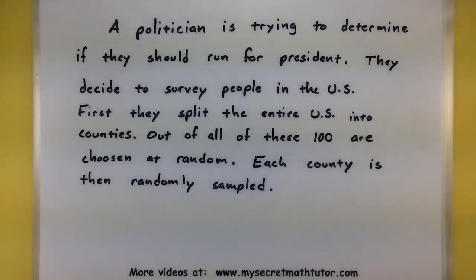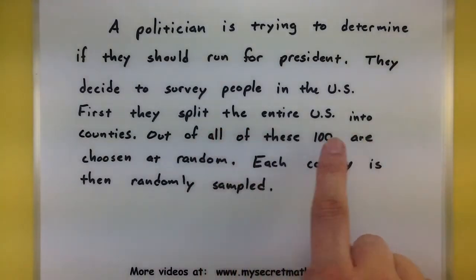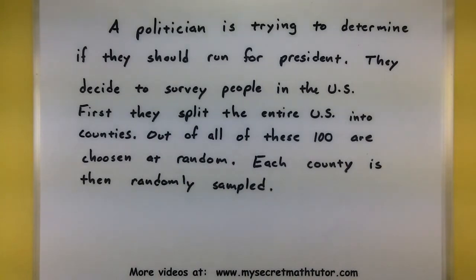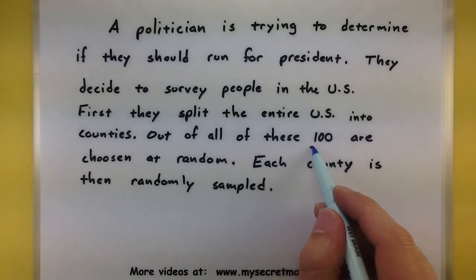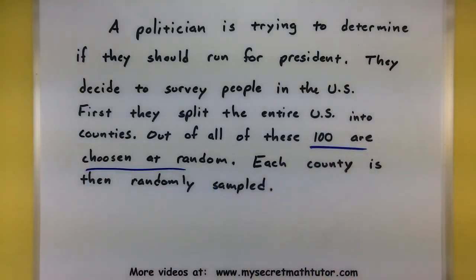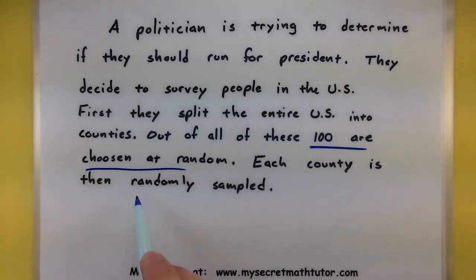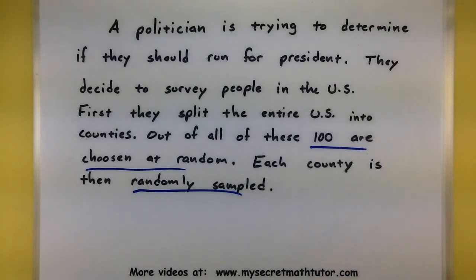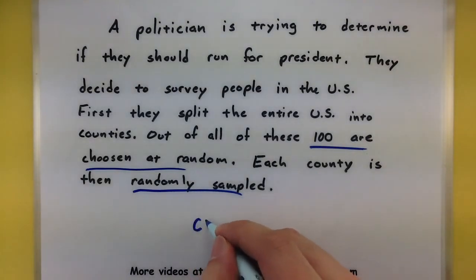It looks like they're breaking things into groups by splitting the entire U.S. into counties, but they don't necessarily choose something from each of those groups. Instead, they only choose 100 of those counties, chosen at random. Furthermore, when they look at each individual county, they go ahead and sample that at random as well. This would be an example of cluster sampling.